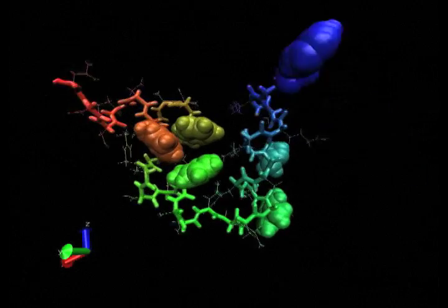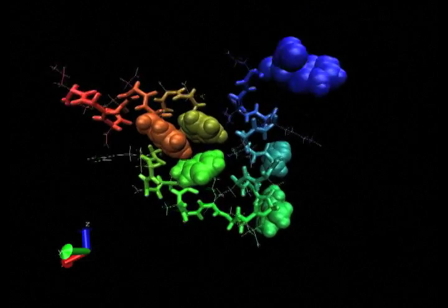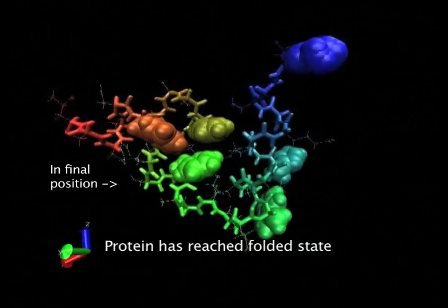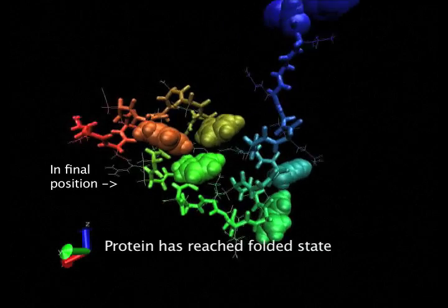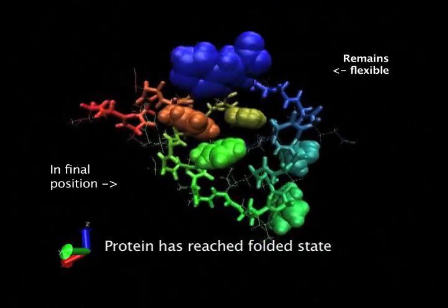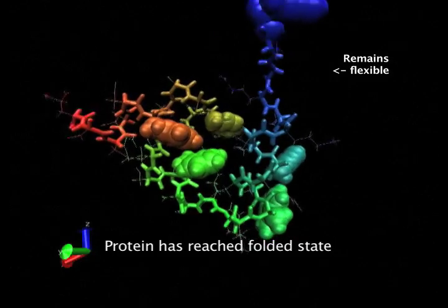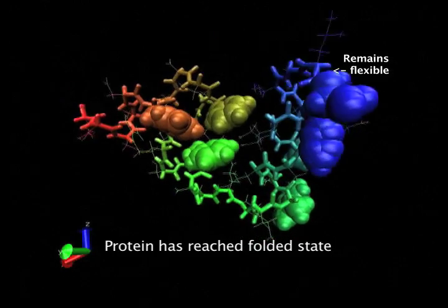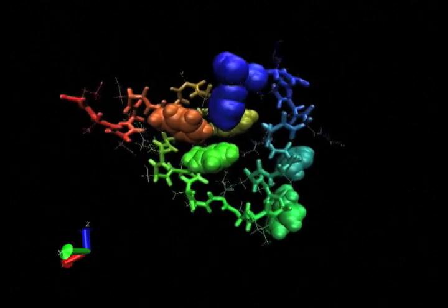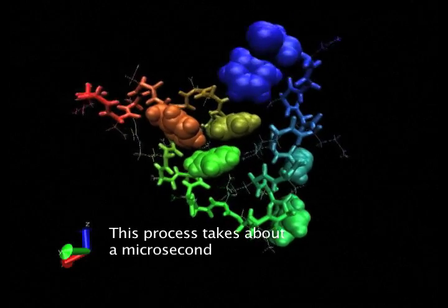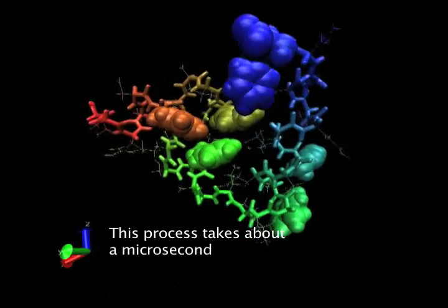So for example here, it's finally reached the folded state where the aromatic residues in red and green are basically in their final spot. The blue phenylalanine is flapping around, but that's the way it would be in nature—that part's not structured. It has basically reached the folded state and is perfectly happy to stay like this for a very, very long time.